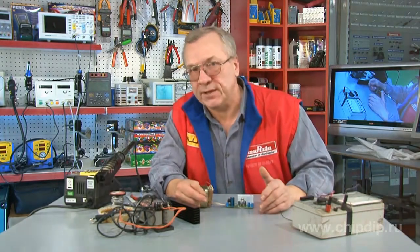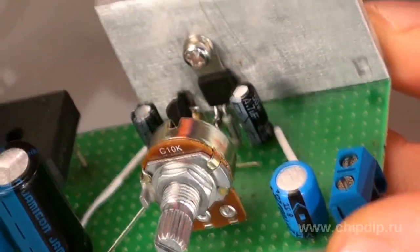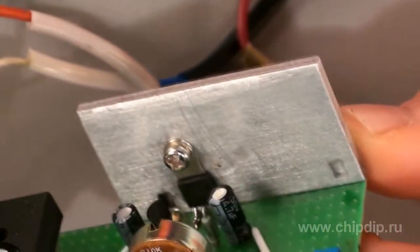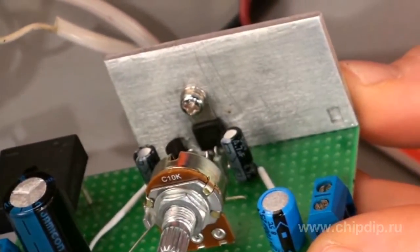I use the transistor in the DPAC package, but for future convenience I decided to go with a non-standard solution when mounting it on the board. The field effect transistor is controlled by the TL431 stabilizer.